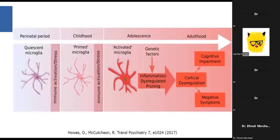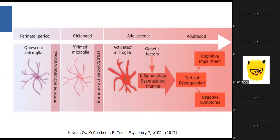One example: at the perinatal period, there were quiescent microglia which get activated and primed with stressors in childhood. Over adolescence and adulthood, this activated microglia contribute to neuroinflammation. It may lead to dysregulated pruning, ultimately leading to cortical dysregulation, cognitive impairment, and negative symptoms. The negative symptoms part is important—positive symptoms or psychotic episodes are usually waxing and waning, but most of the time some negative or cognitive symptoms persist even between those acute episodes.